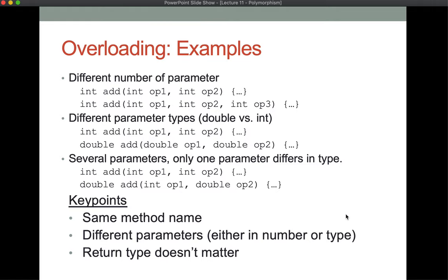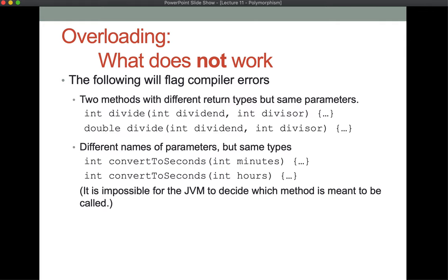Overloading is really just a convenience for naming the same operation on different kinds of data. What won't work: you can't have two methods with different return types but the same parameter types. The types of parameters are what matter, not the names. So a divide with int dividend and int divisor, and a divide with int x and int y, will still produce a compile error — it's the position and types of parameters that make the difference. Similarly, convertToSeconds taking int minutes and convertToSeconds taking int hours are indistinguishable and will throw a compile error.